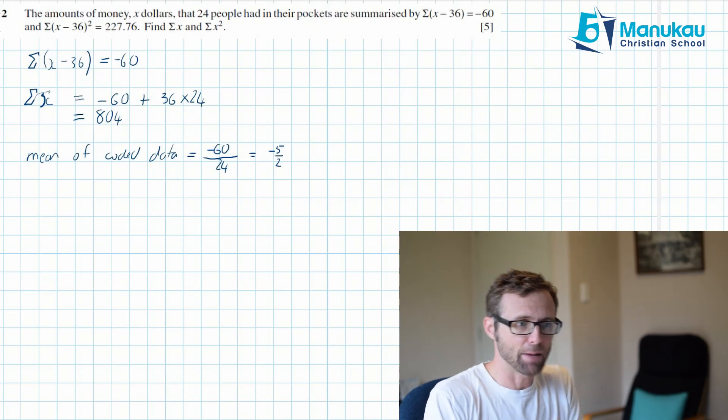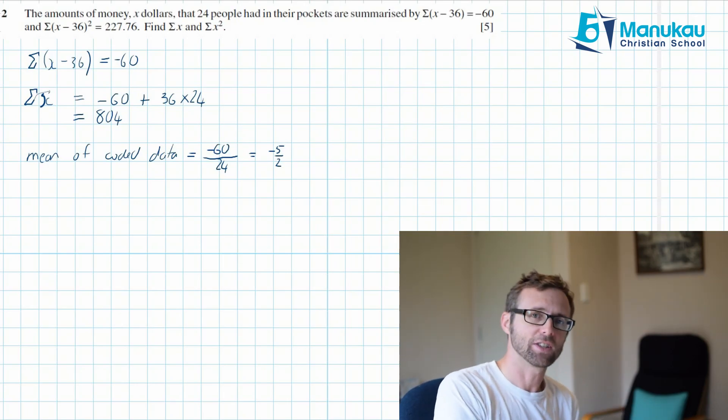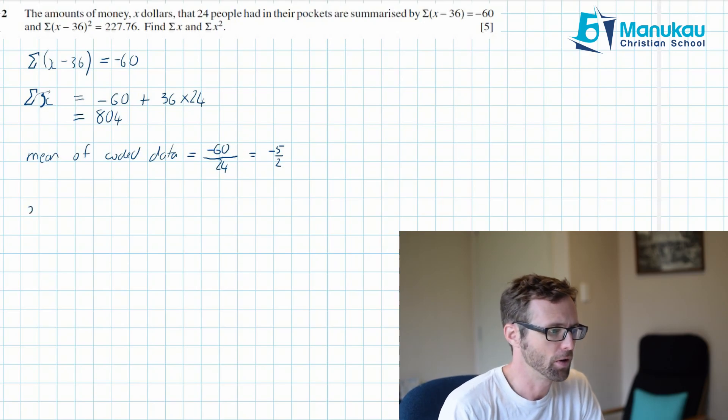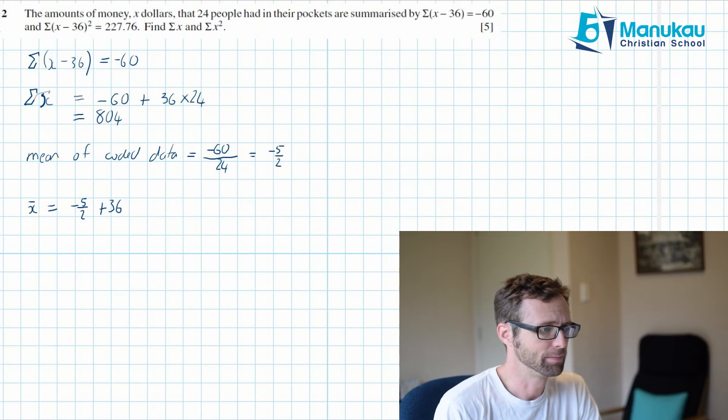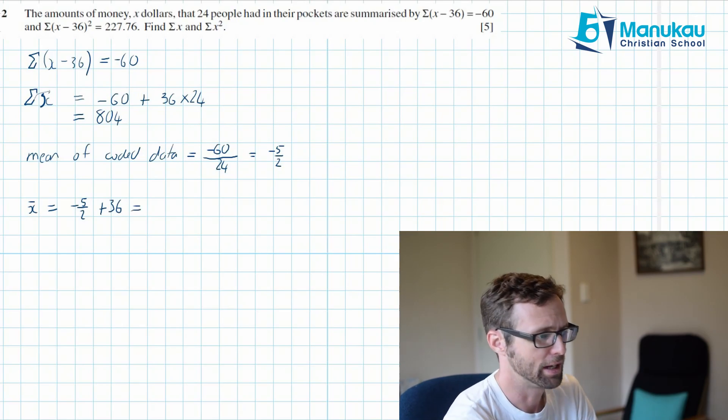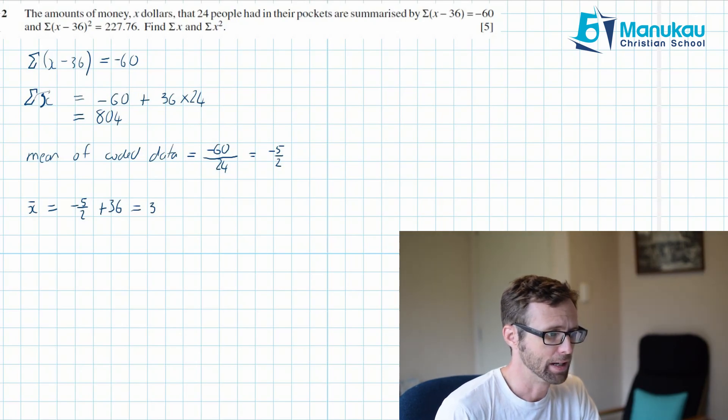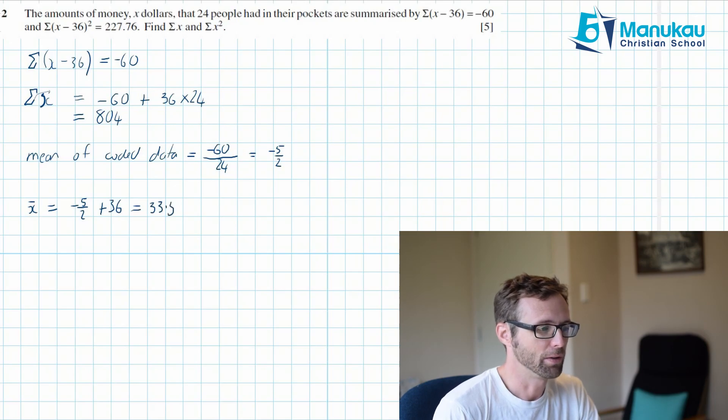Every data point moves down 36 to get to your coded data and that includes the mean. So therefore our mean of the uncoded data is simply negative 5 over 2 and we're going to add 36 to that. And what do we get, 36? Oh sorry, no we're taking away 2, it's a negative 5 over 2. So it'll be 33.5.